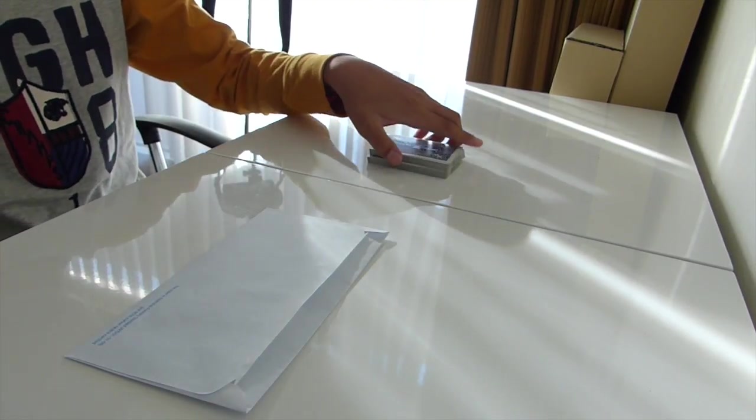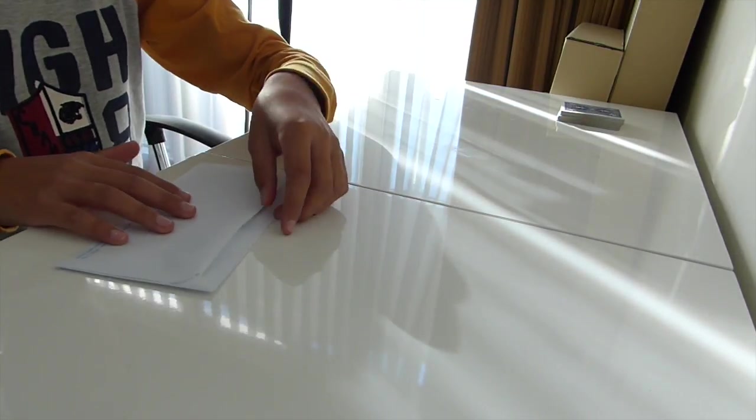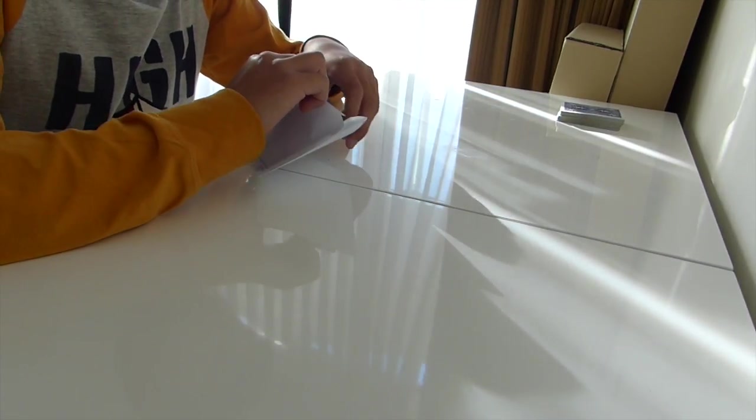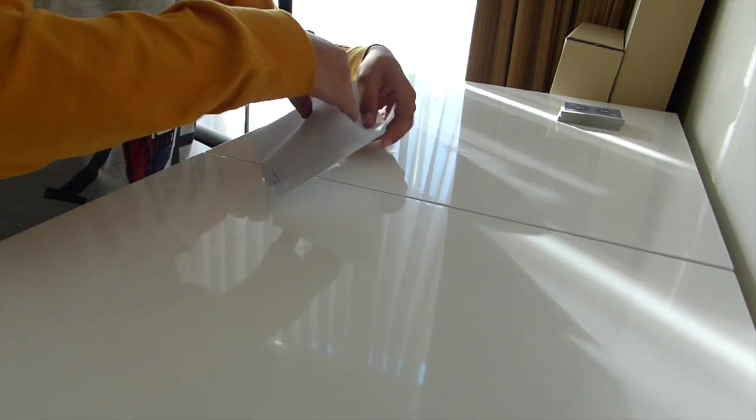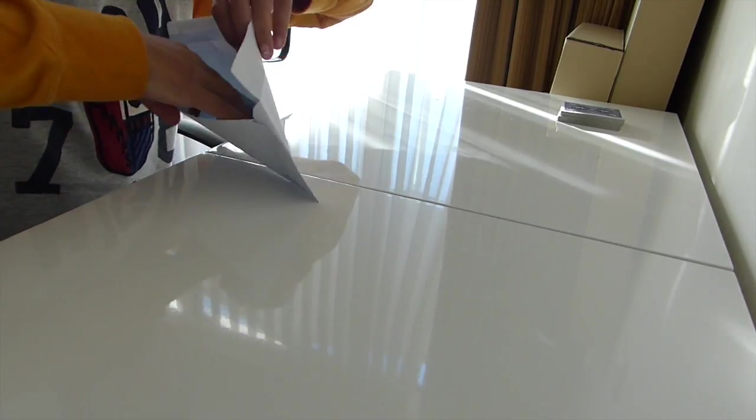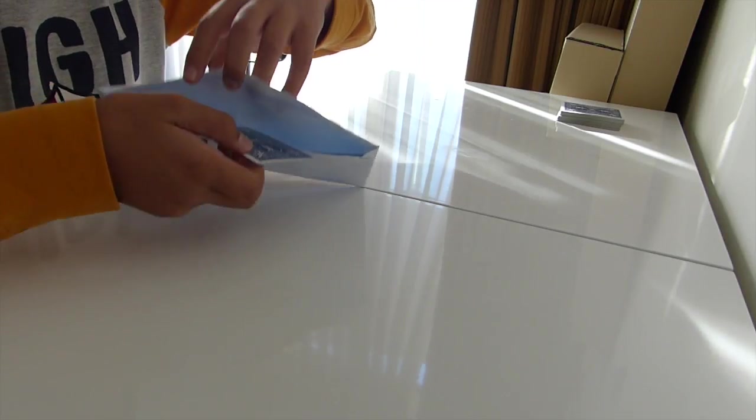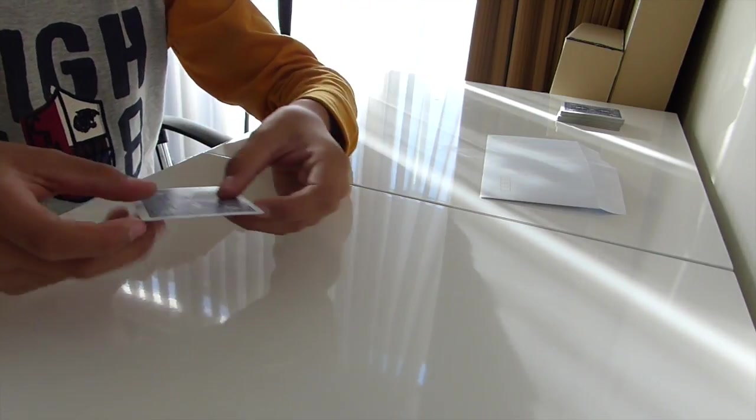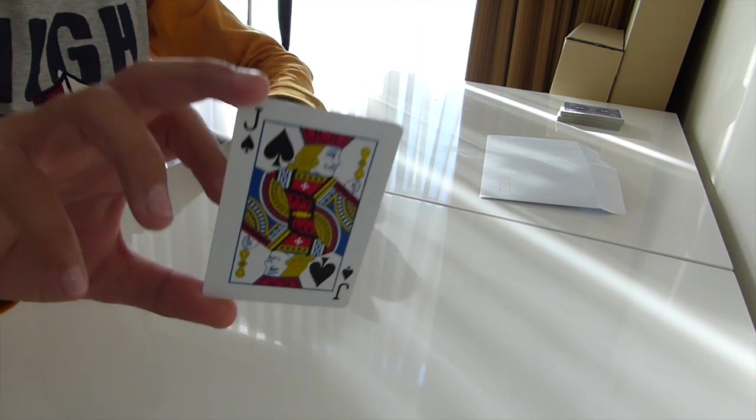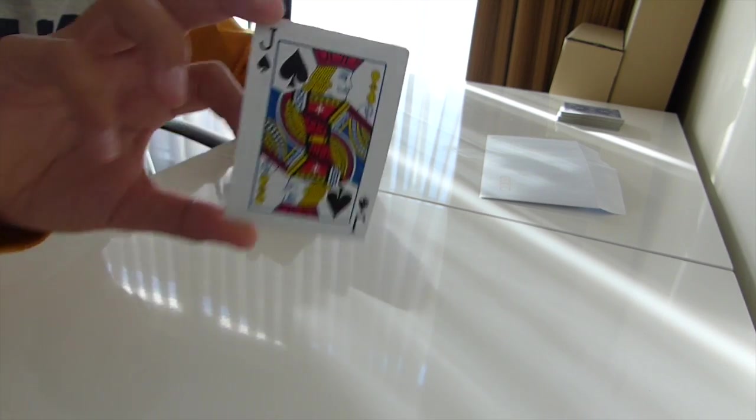Okay, I think it's done. Let's set the deck over here. Open up the envelope. And we can see that the envelope actually does have a card inside. And if we take that card out, the card is your card. The jack of spades.